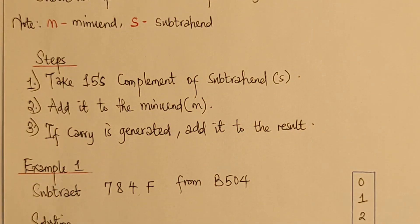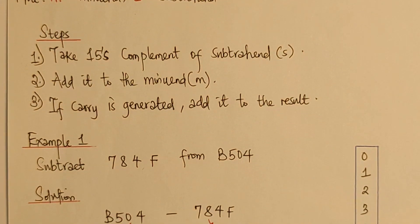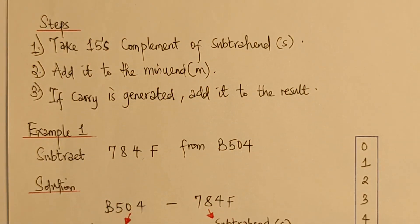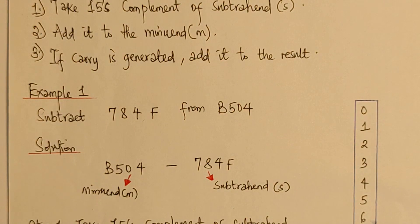Now, let's start with the solution, which is B504 minus 784F. In this case, this becomes our subtrahend, and this becomes our minuend, which you can see. Now, we'll start implementing the steps.